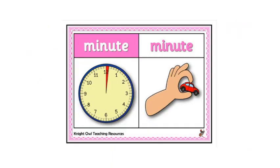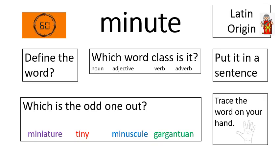The homographs we're learning today are 'minute' and 'minute' — one word on our spelling list but with two very different meanings. It can be a minute of time, or it can mean a minute thing — a very small thing. Depending on how you say and use the word in your sentence, that will determine the meaning. I'd like you to give me two definitions, one for each version of the word, think about two different word classes, maybe write two sentences, find the odd one out, and trace the spelling on your hand. It's a word that is Latin in origin.